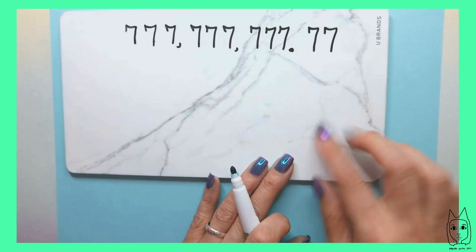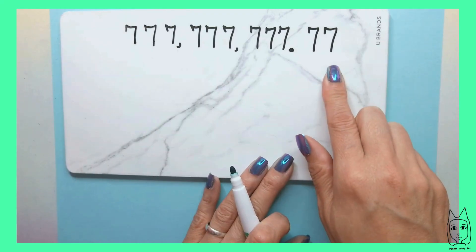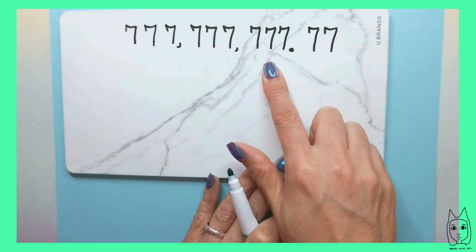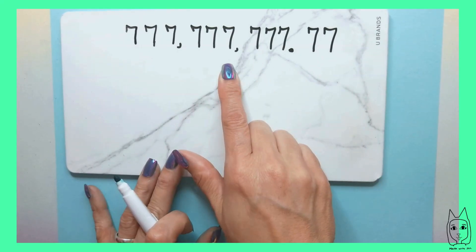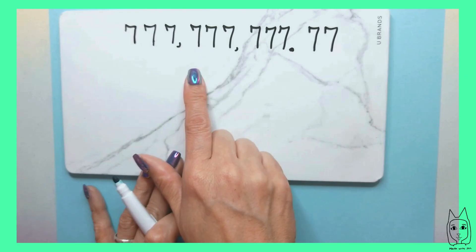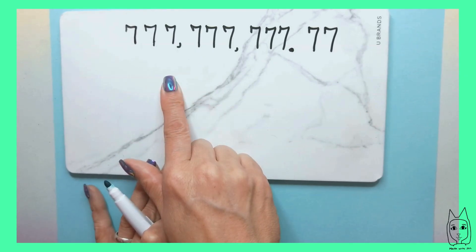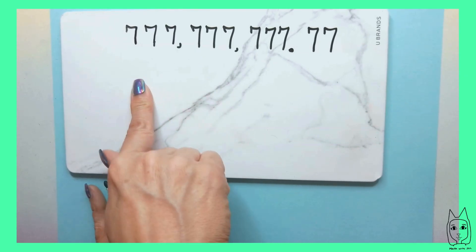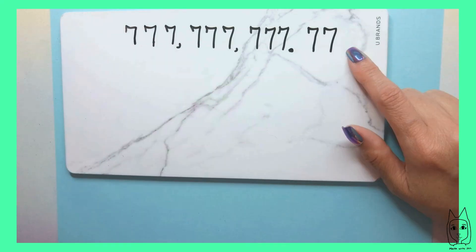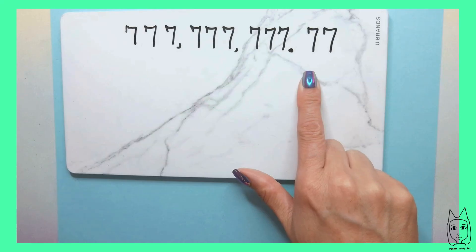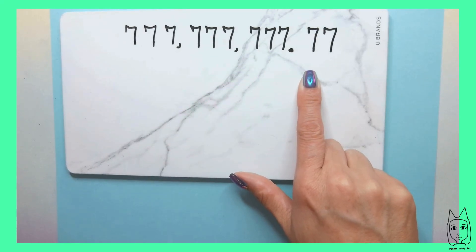Let's go through the place values one more time before we get started — the place values we have for grade four: hundreds, tens, ones, tenths, hundredths, thousandths, ten-thousandths, hundred-thousandths, millions, ten-millions, and hundred-millions. We are going to be looking at how the value of the seven in each place value is 10 times the position to the right.